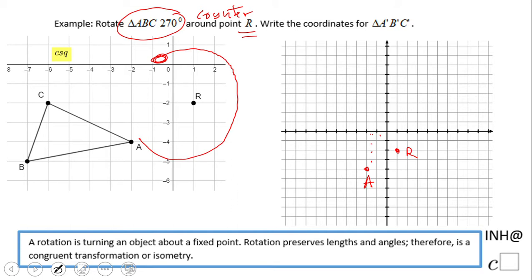Simply, you can see point A. One, two, three. One, two. So point A is three units to the left and two units down.